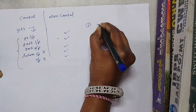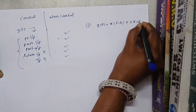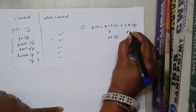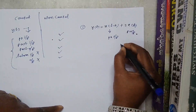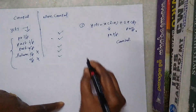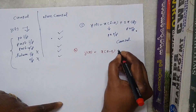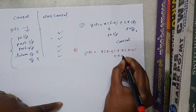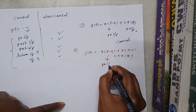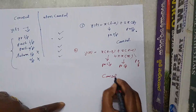Let us check with examples. Y(t) = x(t-2) + 2·x(t): here x(t-2) is past input and x(t) is present input, so this signal is causal. Another example: y(n) = x(n-2) + x(n-1) + n·x(n), where x(n-2) and x(n-1) are past inputs and x(n) is present input. Again, the system is causal.